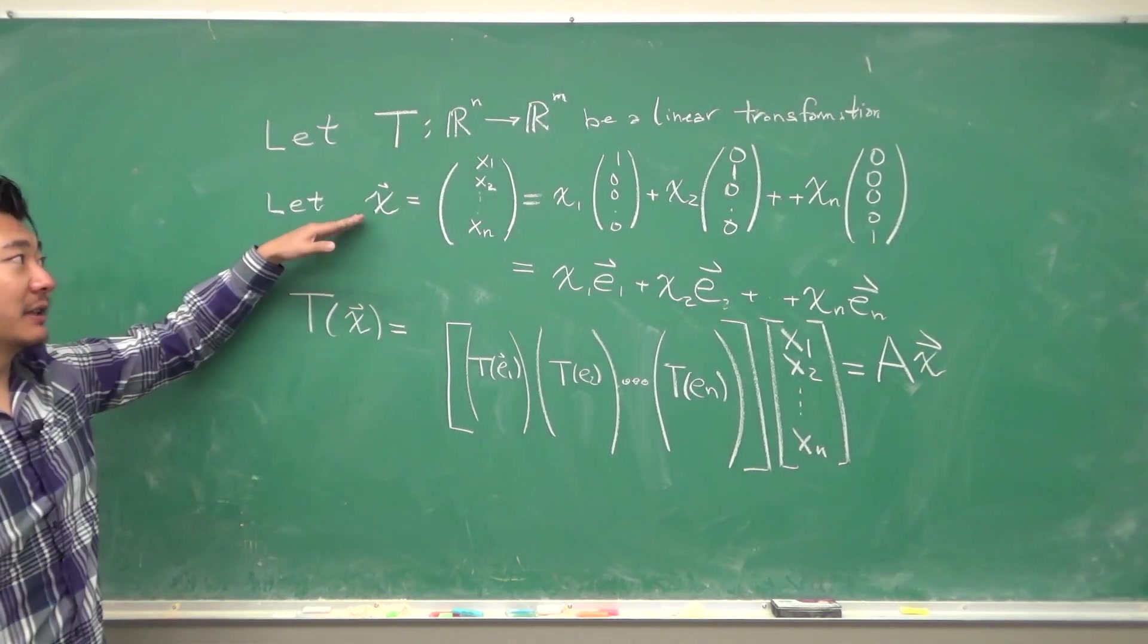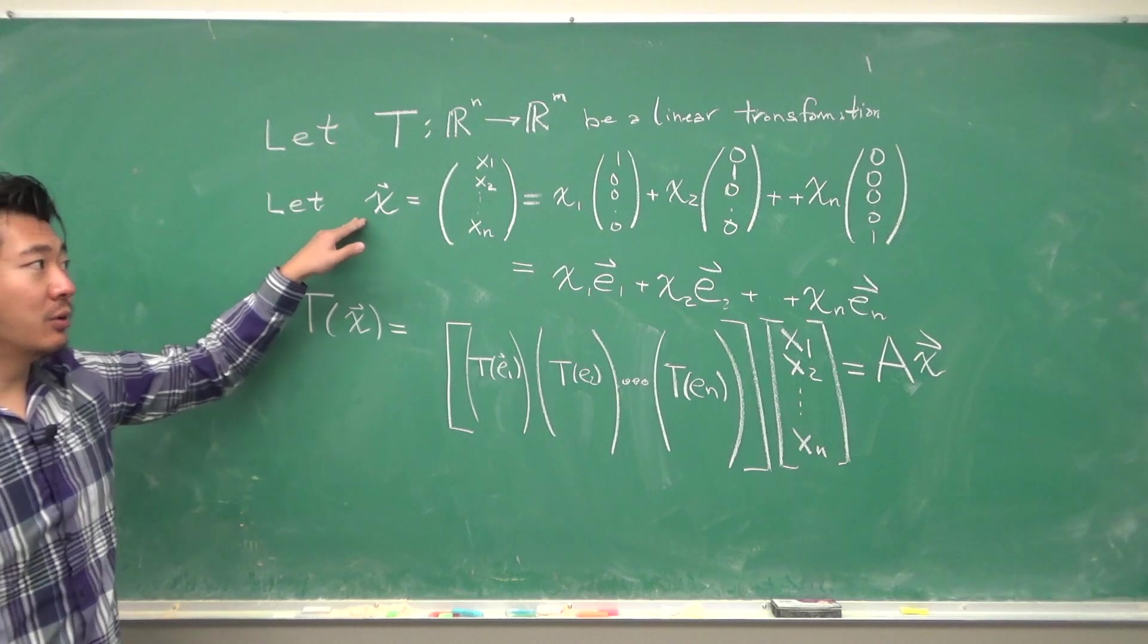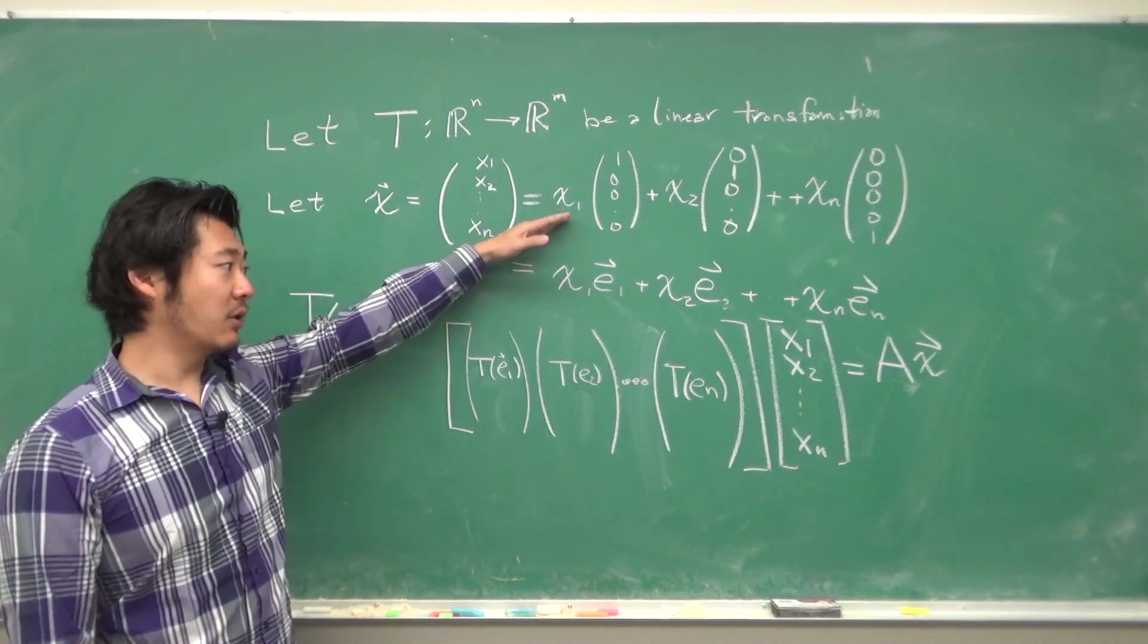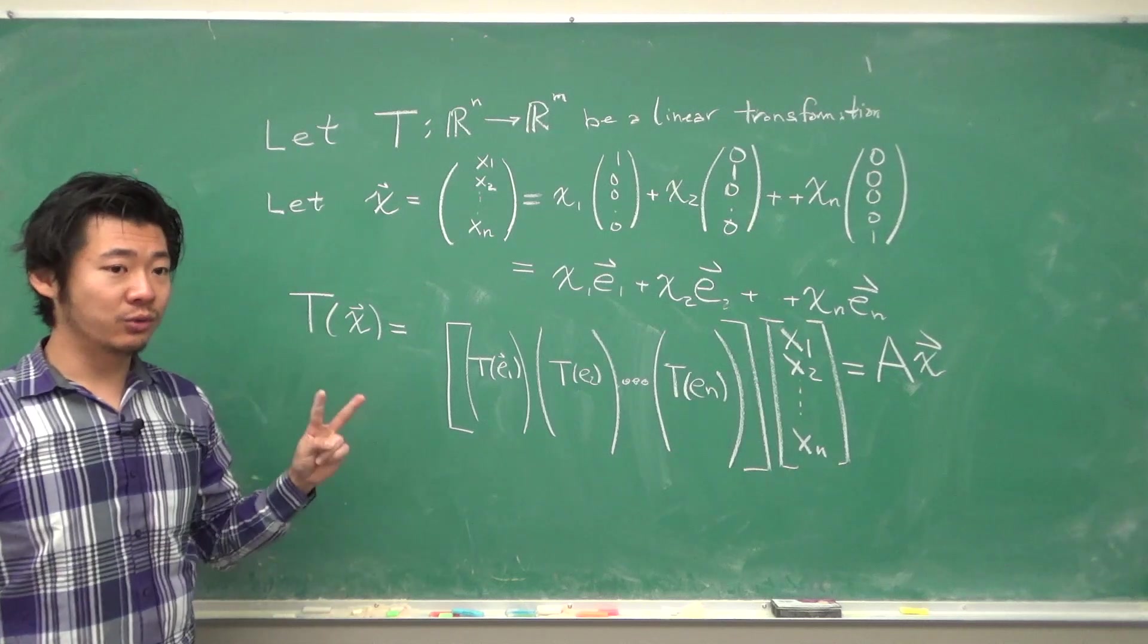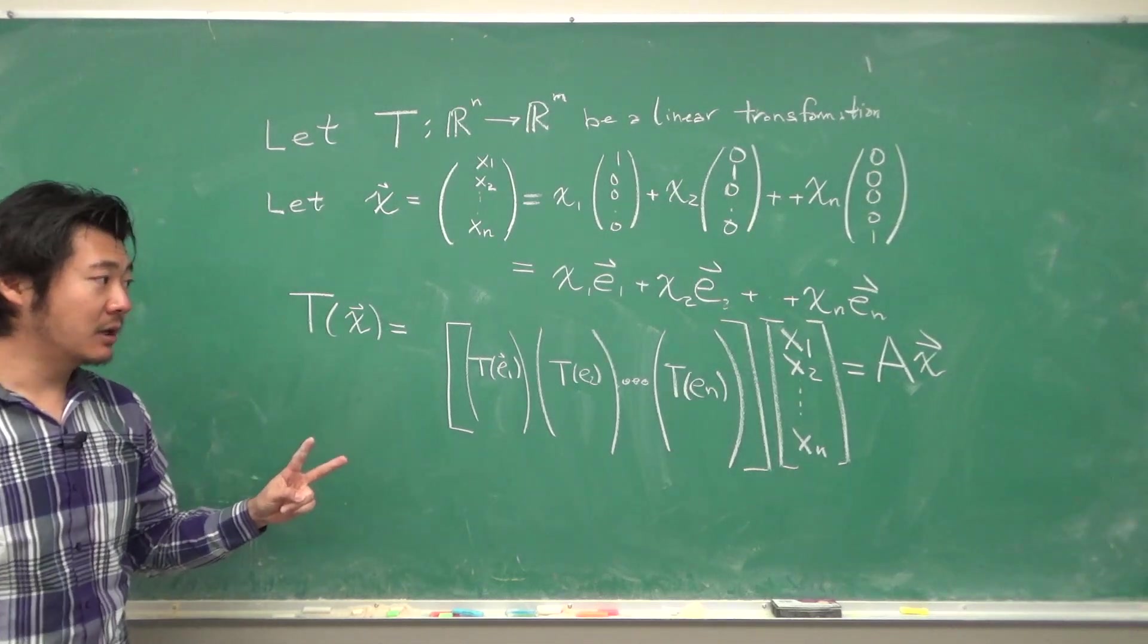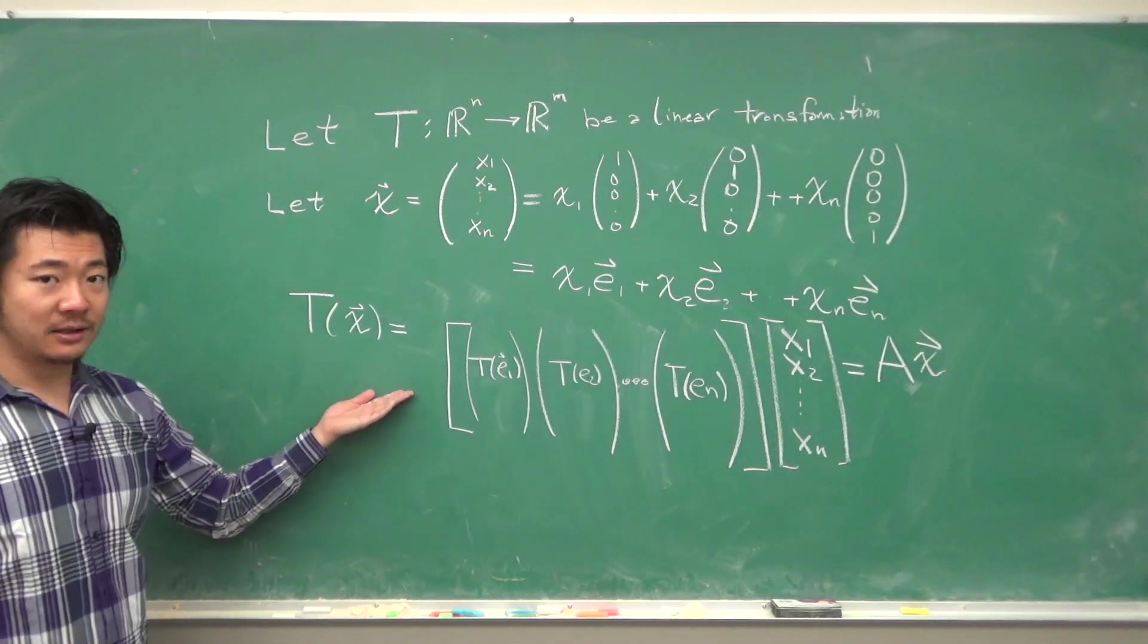We broke up the vector x into a linear combination of this form and then we applied this transformation, used the two rules about linear transformation, and we managed to get this form.